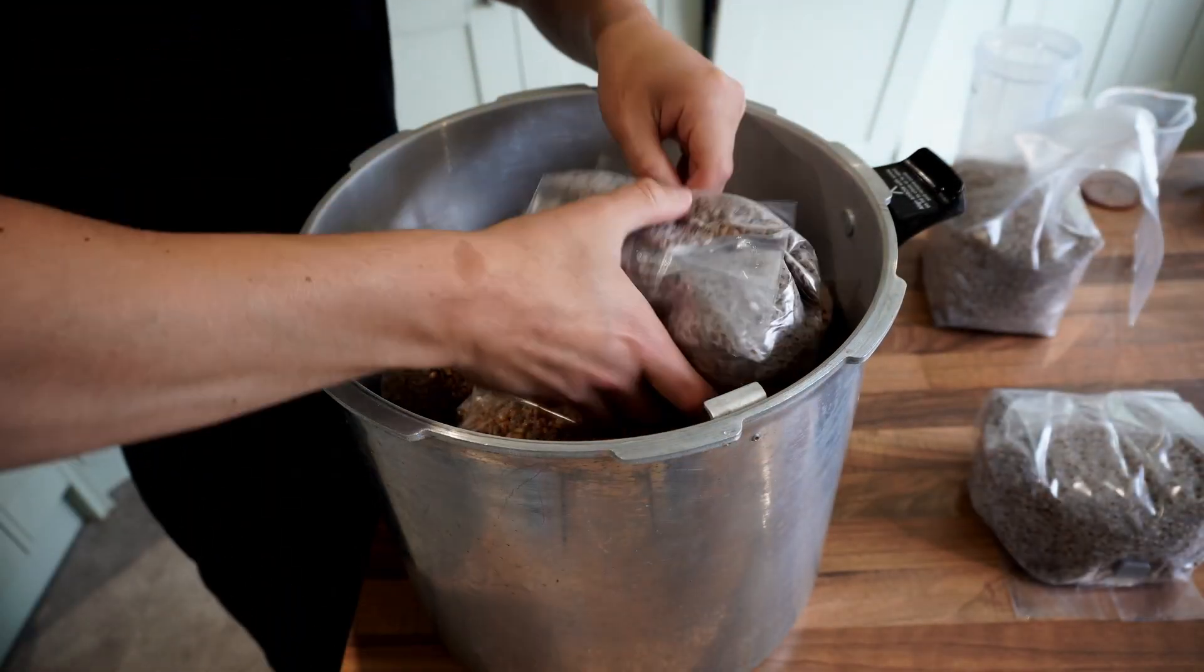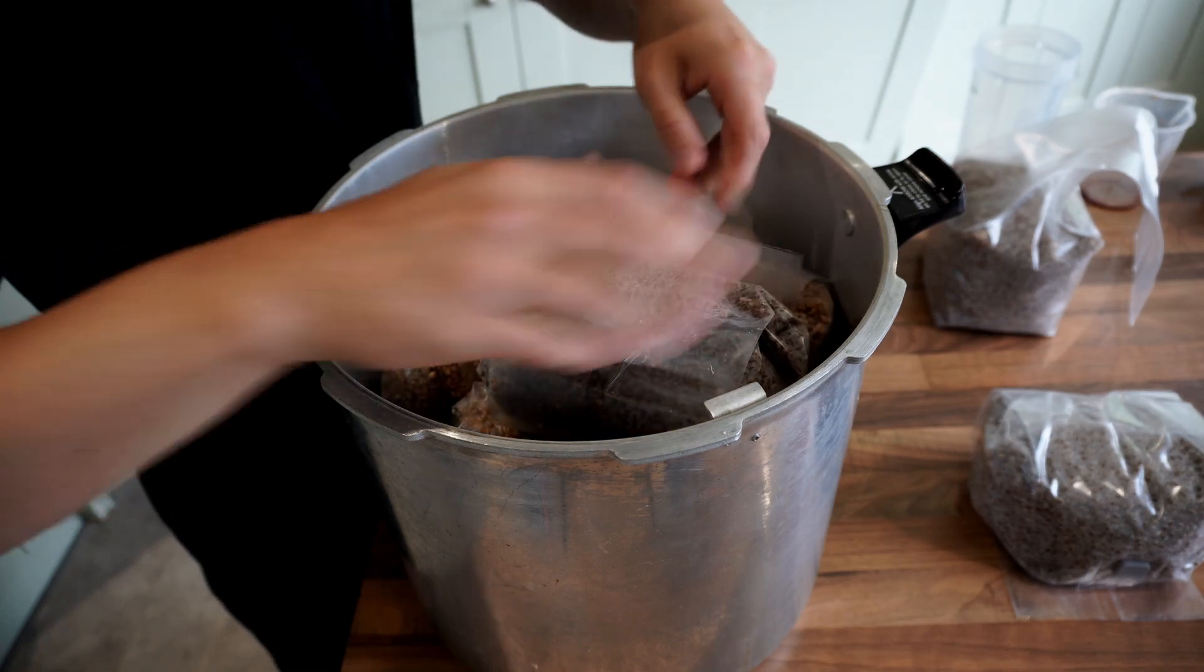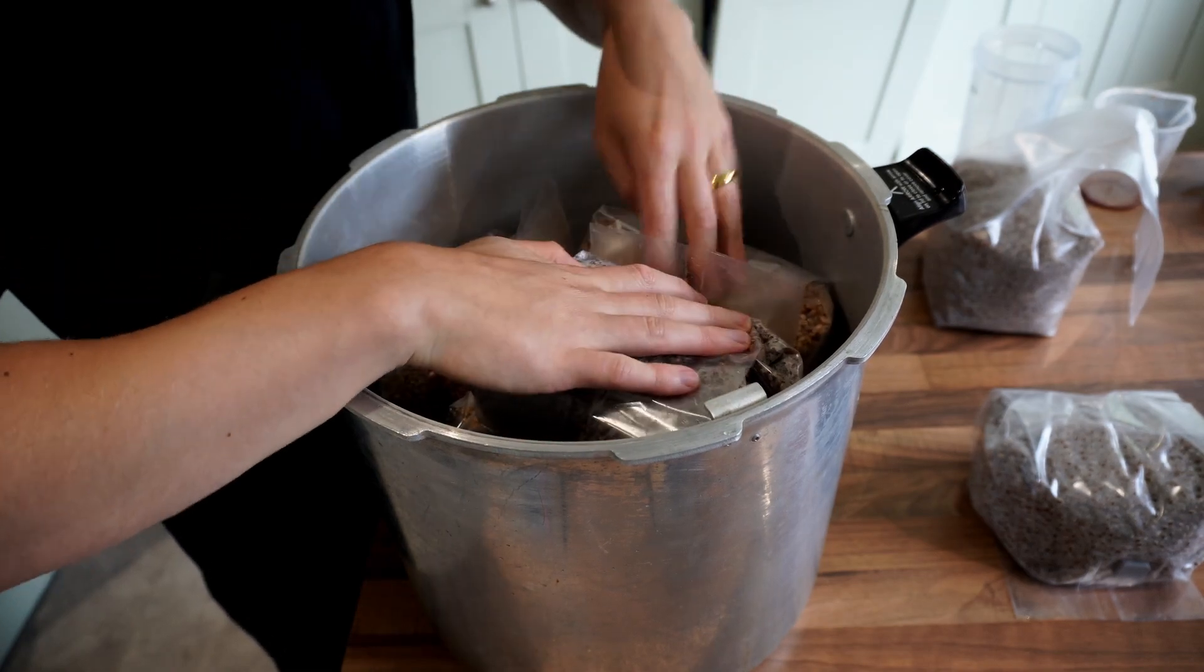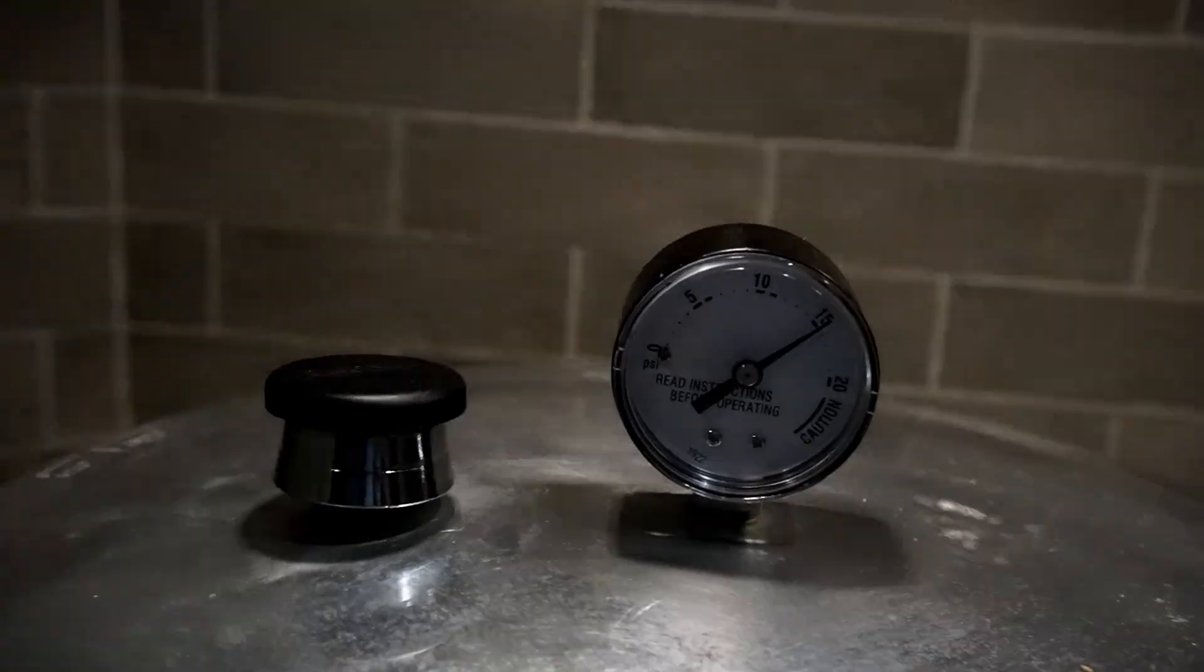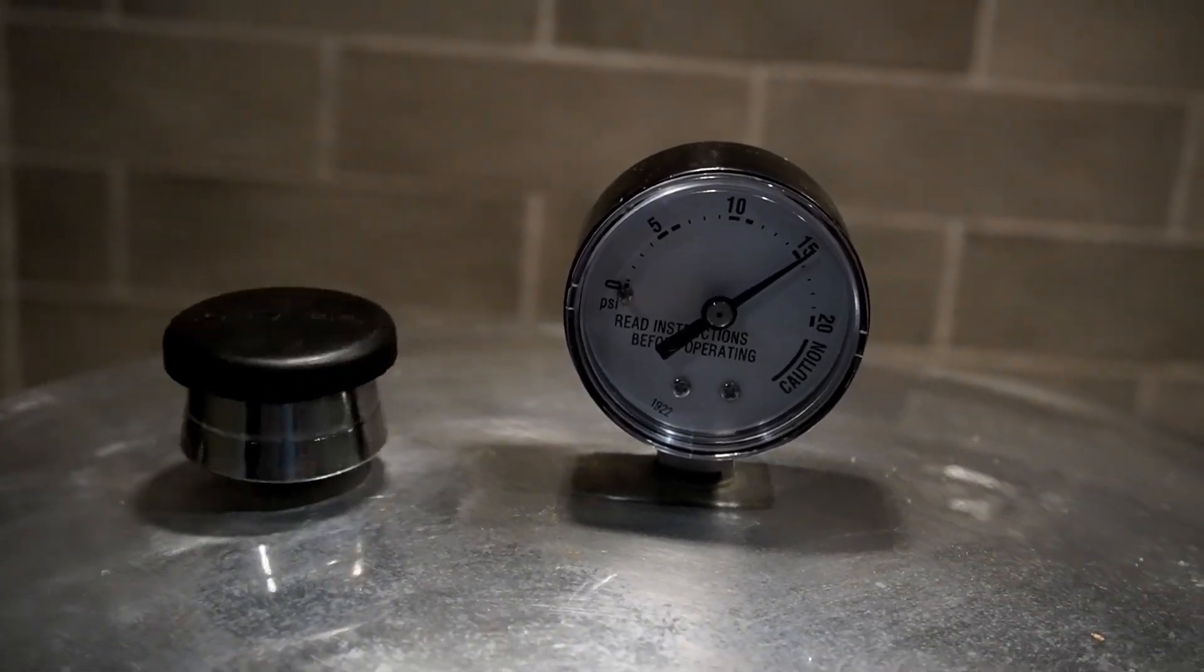You want to sterilize these grains at 15 psi for three and a half hours and I have a video on my channel about how to properly use the pressure cooker so if you are still a beginner and you don't know how to do that go over and watch that video.